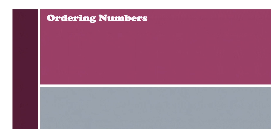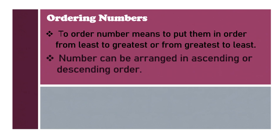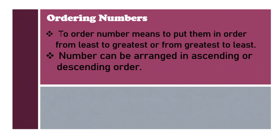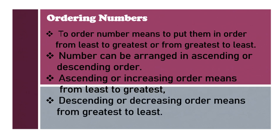So what is ordering numbers? To order numbers means to put them in order from least to greatest or from greatest to least. Numbers can be arranged in ascending or descending order. When you say ascending order or increasing order, meaning you are arranging numbers from least to greatest. And when you say descending order or decreasing order, arranging numbers from greatest to least.